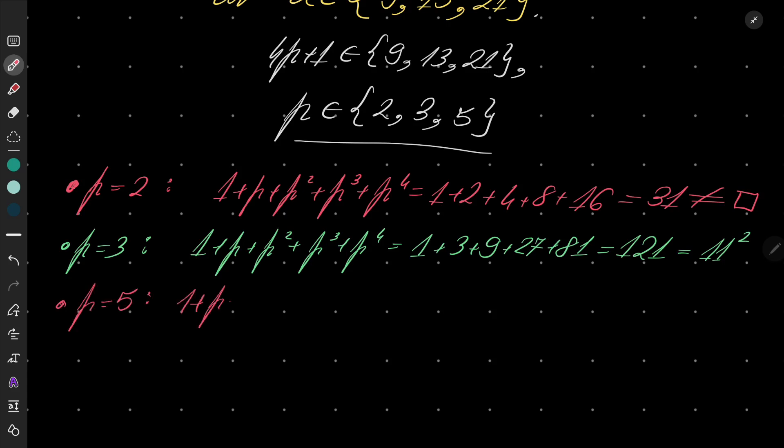1 plus p plus p squared plus p cubed plus p to the fourth power: 1 plus 5 plus 25 plus 125 plus 625.